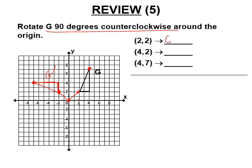Let's see the pattern. Two, two ended up at negative two, two. Four, two ended up at negative two, four. Four, seven ended up at negative seven, four. I don't expect you to memorize these patterns, but you know there's a pattern: the y-value comes over and becomes the new x's opposite, and the other coordinate goes over and stays the same.